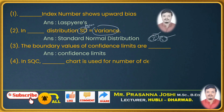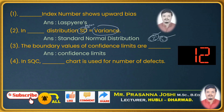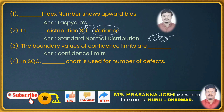Next: in SQC, dash chart is used for number of defects. This is from statistical quality control. The C chart is used for the number of defects, so the answer is C chart. If the question had asked about the number of defectives instead of defects, the answer would have been the D chart or NP chart. But here it is defects, so C chart is the answer.